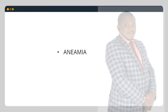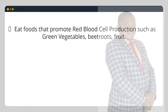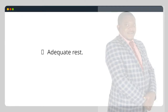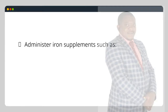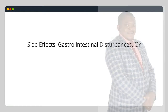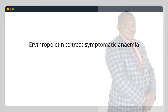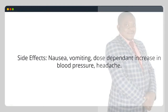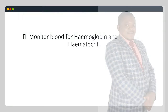Anemia. Encourage the patient to eat foods that promote red blood cell production such as green vegetables, beetroots and fruit; ensure adequate rest. Administer iron supplements such as folic acid tablets 5 mg once a day orally. Side effects: gastrointestinal disturbances. Erythropoietin to treat symptomatic anemia — side effects: nausea, vomiting, dose-dependent increase in blood pressure, headache. Monitor blood for hemoglobin and hematocrit.